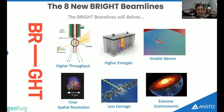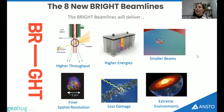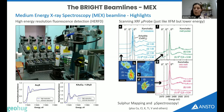Before I finish, I want to touch on some new beamline capabilities coming soon — we call it the BRIGHT program. We're building eight new beamlines on top of the 10 we already have, delivering things like high-throughput samples, better spatial resolution, more different environments for your sample, and a whole lot of new possibilities. In particular, I'm excited about the medium energy spectroscopy beamline, which will do a similar thing to XAS but cover a gap in energy range between XAS and the current soft X-ray beamline. It's going to make sulfur speciation possible — at the moment we often go to Taiwan to do that, but we'll be able to do it here in Australia pretty soon.